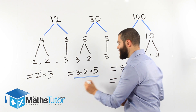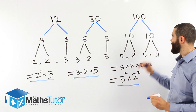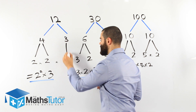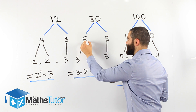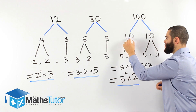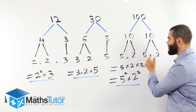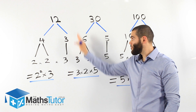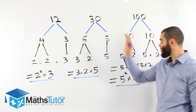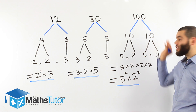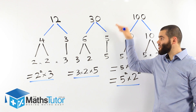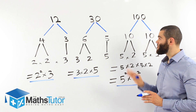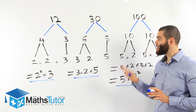So there are our answers: two squared times three makes twelve; three times two times five makes thirty; and five squared times two squared makes one hundred. These are the prime factor breakdowns. Prime numbers stay as they are; composite numbers get broken down until we reach all primes. Solving a factor tree is easy if you know your times tables and your factors. As I always tell my students: if you know your times tables, it's simple — just do it.